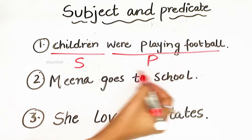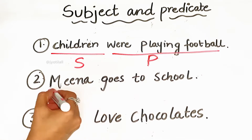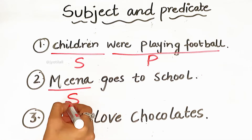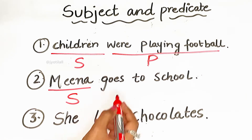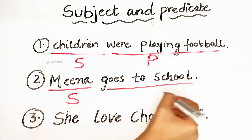Next example: 'Mina goes to school.' Who goes to school? Mina. So 'Mina' is the subject here, and 'goes to school' is the predicate.